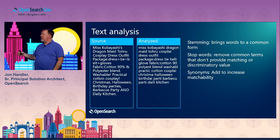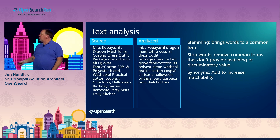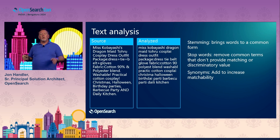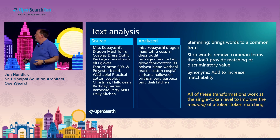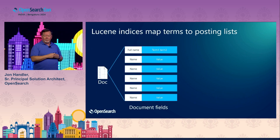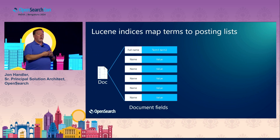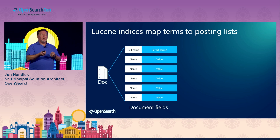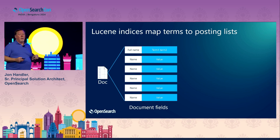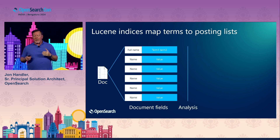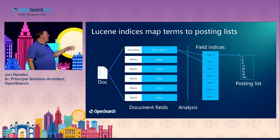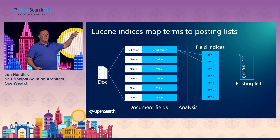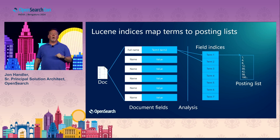The analyzed version looks a little weird because of how the stemmer works, but this is the actual text available for matching. These all work at the single token level and improve the capture of meaning. OpenSearch is based on Apache Lucene, a Java library that reads and writes search indices. Lucene maps all the terms in a document to the set of documents that contain those terms. We pass document fields through analysis, collect a set of terms, and each word points at what we call a posting list — the set of documents that contain those terms.